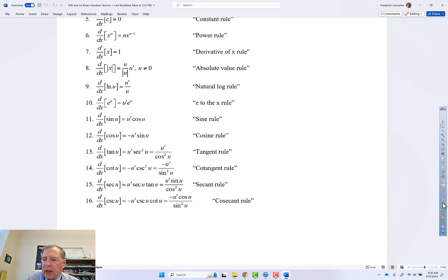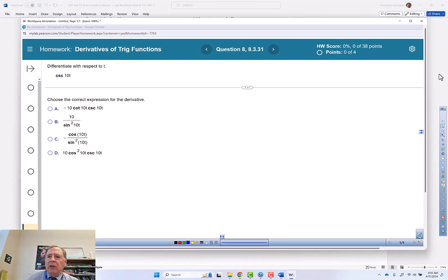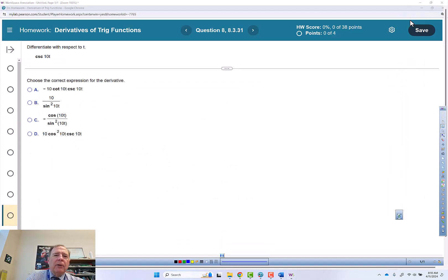So we're going to go back to our work and write that rule out. If y equals cosecant of u, then y prime is negative u prime times cosecant of u times cotangent of u.